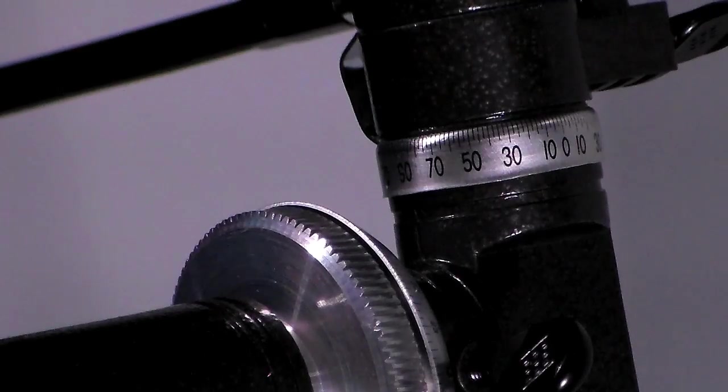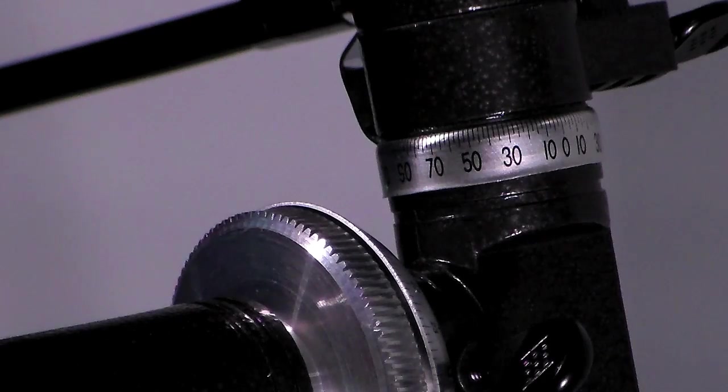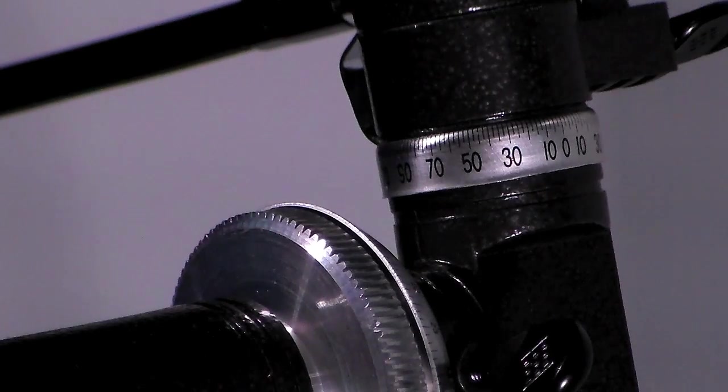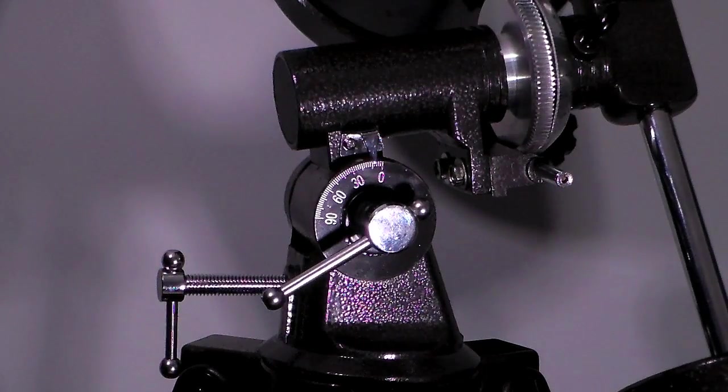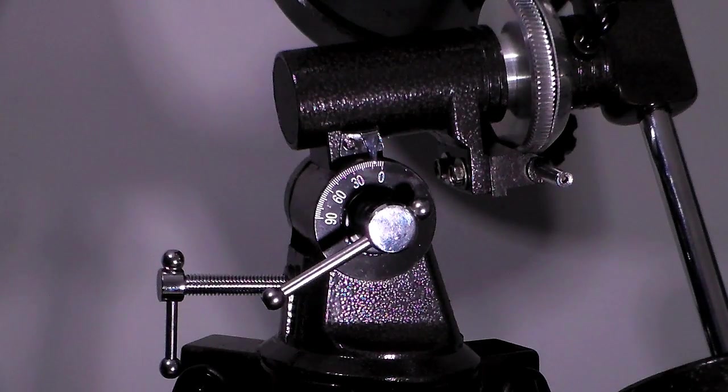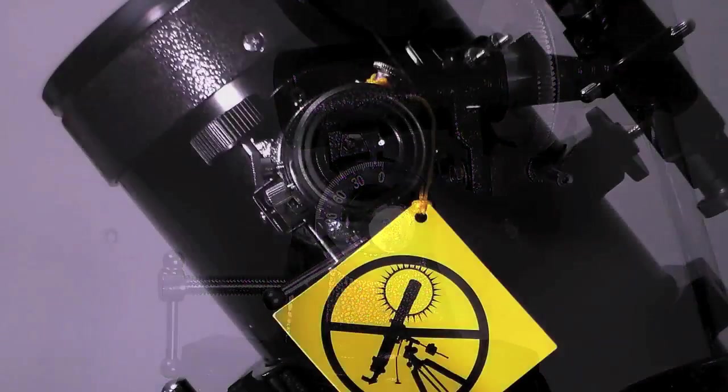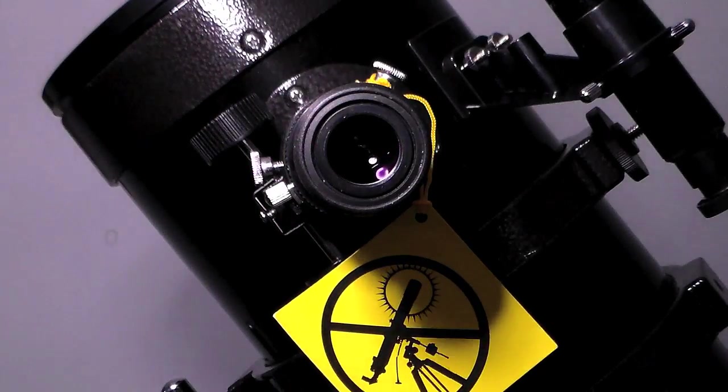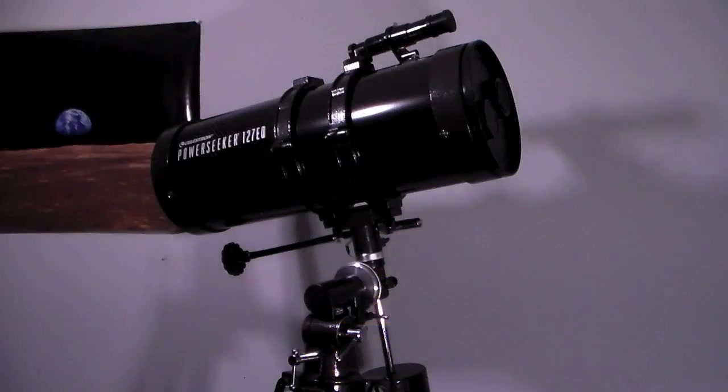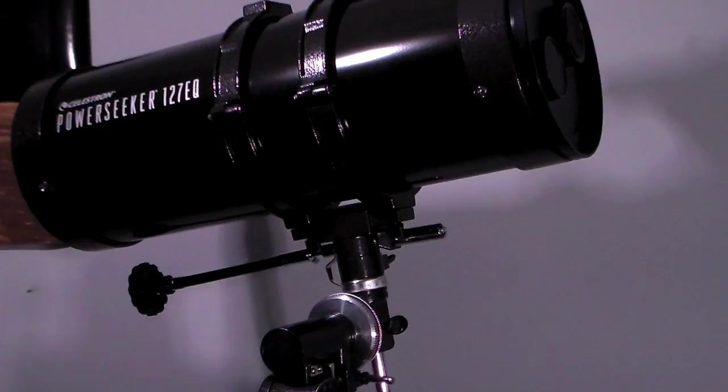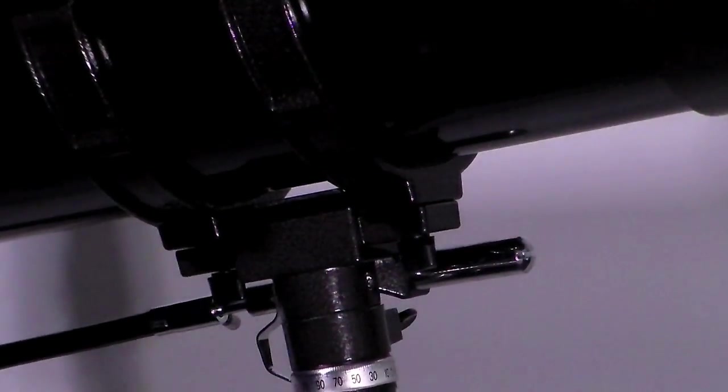This telescope has declination settings and right ascension settings. In astronomy, declination is one of the two angles that locate a point on the celestial sphere in the equatorial coordinate system. The right ascension is the east-west coordinate by which the position of a celestial body is ordinarily measured. More precisely, it is the angular distance of a body's hour circle east of the vernal equinox measured along the celestial equator.